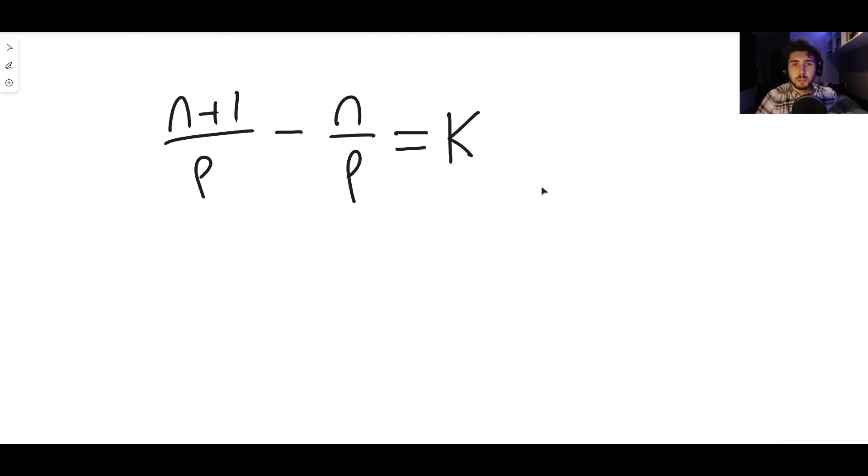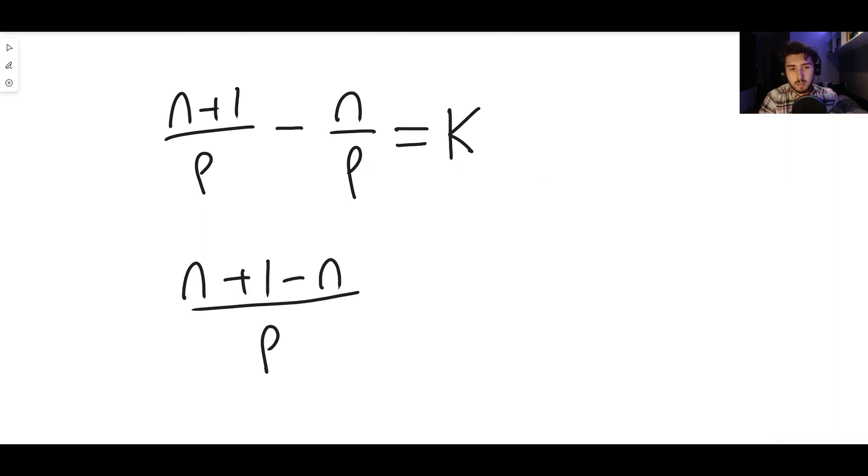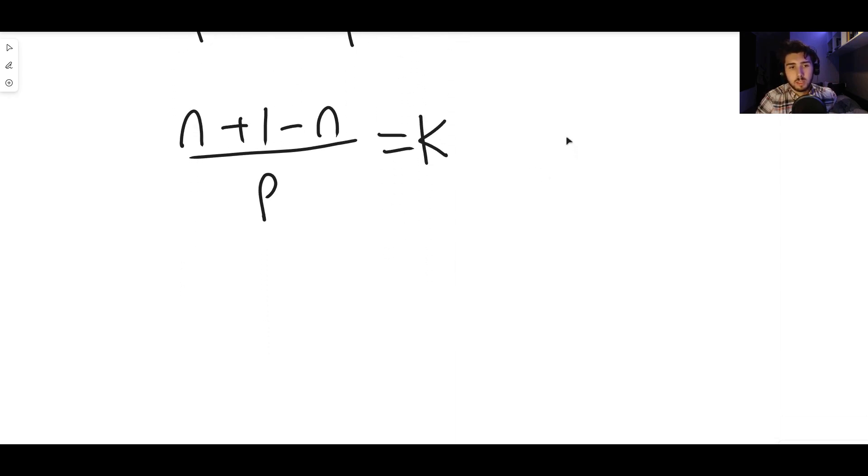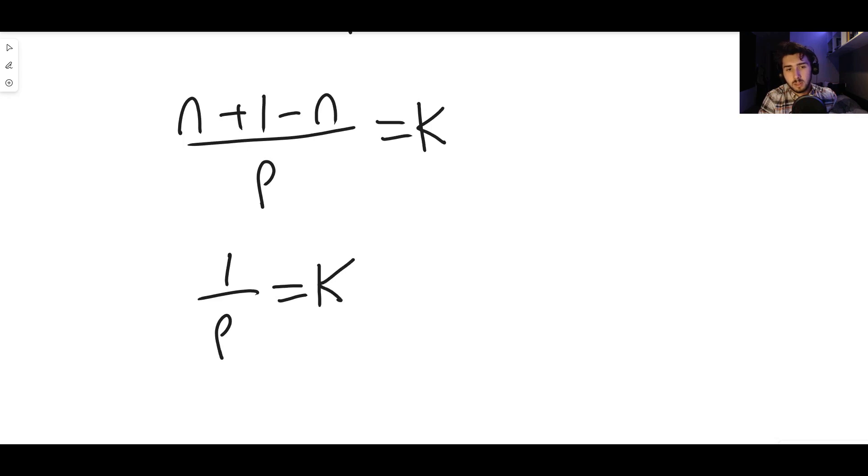And of course they have the same denominator, so we can combine them and we can write this as (n+1-n) all divided by p and that should be equal to some integer k. And of course we can simplify this and n+1 minus n is just one. So one divided by p is k.